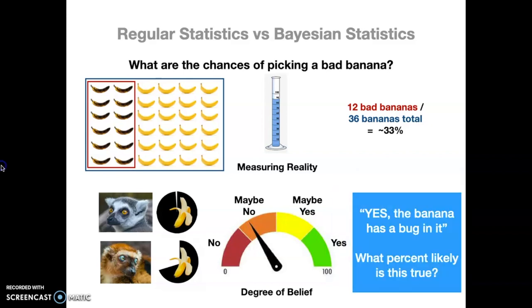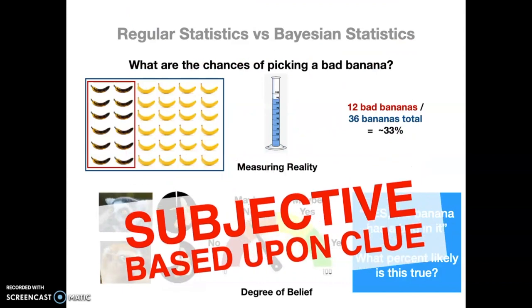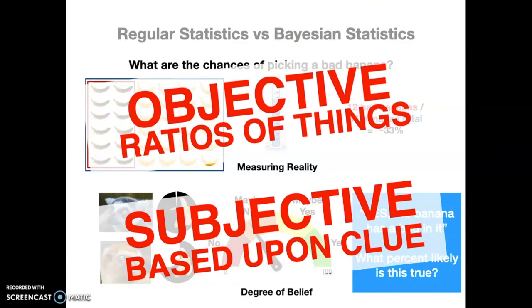So it becomes sort of a subjective measure of what's going to happen. It's more based upon what that clue is and what things you have in your head. And you're really measuring the statement. Yes, the banana has a bug in it when these other conditions are true. And you're really looking at what percent likely is that statement true rather than measuring actual reality. You're measuring kind of like statements actually. So it's a subjective measurement. It's based upon a clue. Whereas up here, the regular statistics is actual objective ratios of things. You're actually measuring those things. And then you're applying that as opposed to applying a subjective measurement on a statement or an idea.